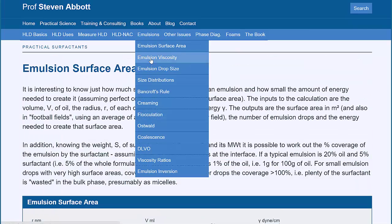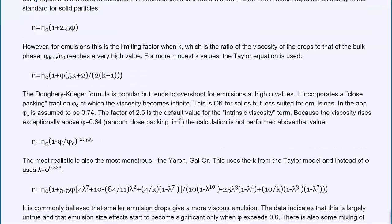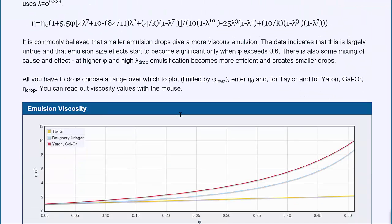Then we look at emulsion viscosity. If you start making large quantities of emulsion, then the viscosity depends on the volume fraction, and there are a number of theories: Taylor, Doherty, Krieger. My favorite is Yaron-Gal-Or, which is this horrible equation here.